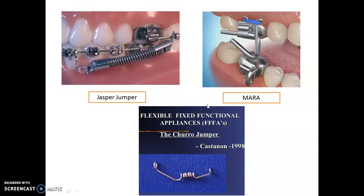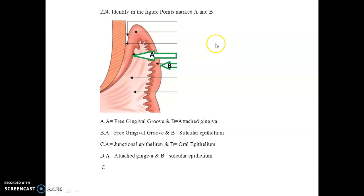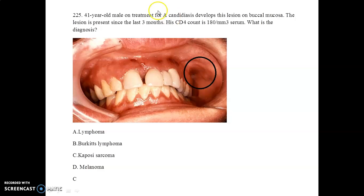I have uploaded around six to seven videos on different subjects covering image-based questions; the description link and the 'i' button above will help for comprehensive learning. These three — Jasper Jumper, MARA, and Churro Jumper — are your fixed functional appliances. In the next figure, points marked A and B are identified: A indicates the junctional epithelium and B indicates the oral epithelium.